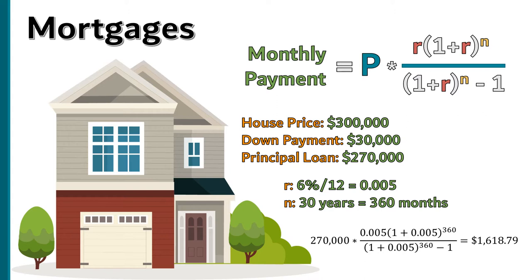So you would make that payment each month for 30 years. Note you are paying back quite a bit more than $270,000 — 360 times $1,618.79 is over $582,000, which means you're paying back the $270,000 borrowed and over $312,000 in interest over those 30 years.